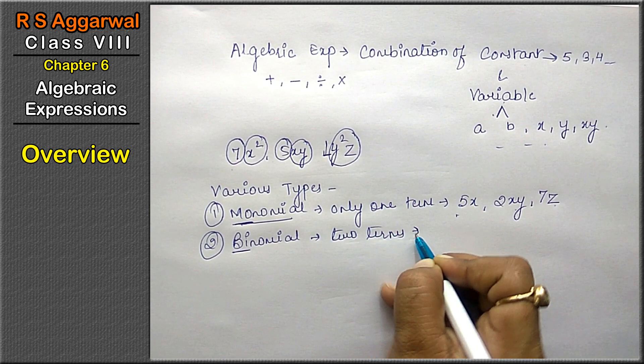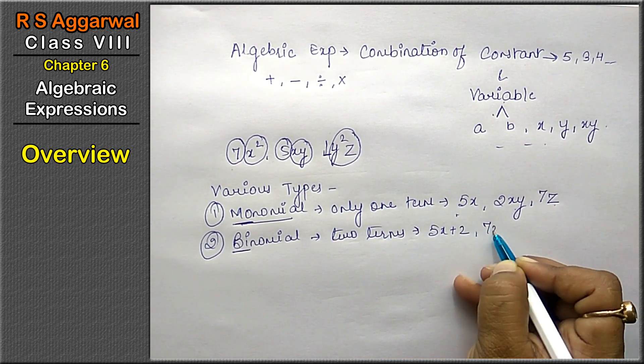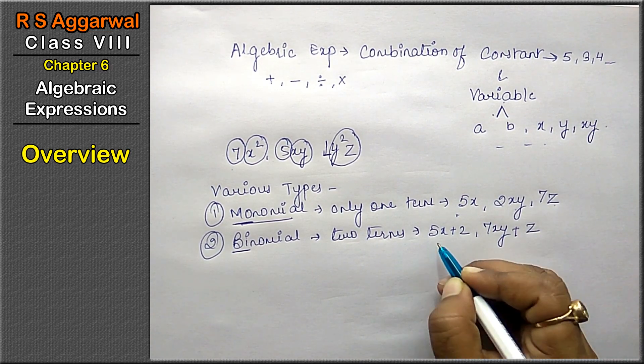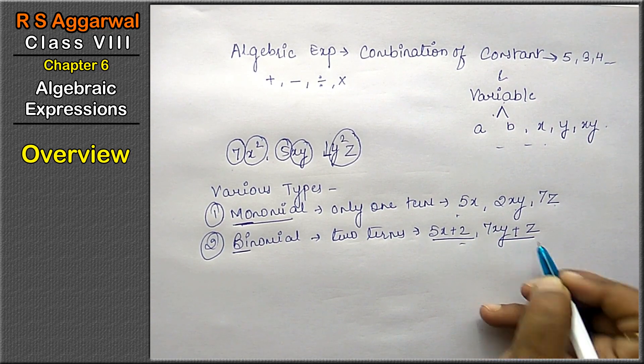Binomial has two terms. Like 5x + 2, 7xy + z. Two terms. Either it is constant or variable.